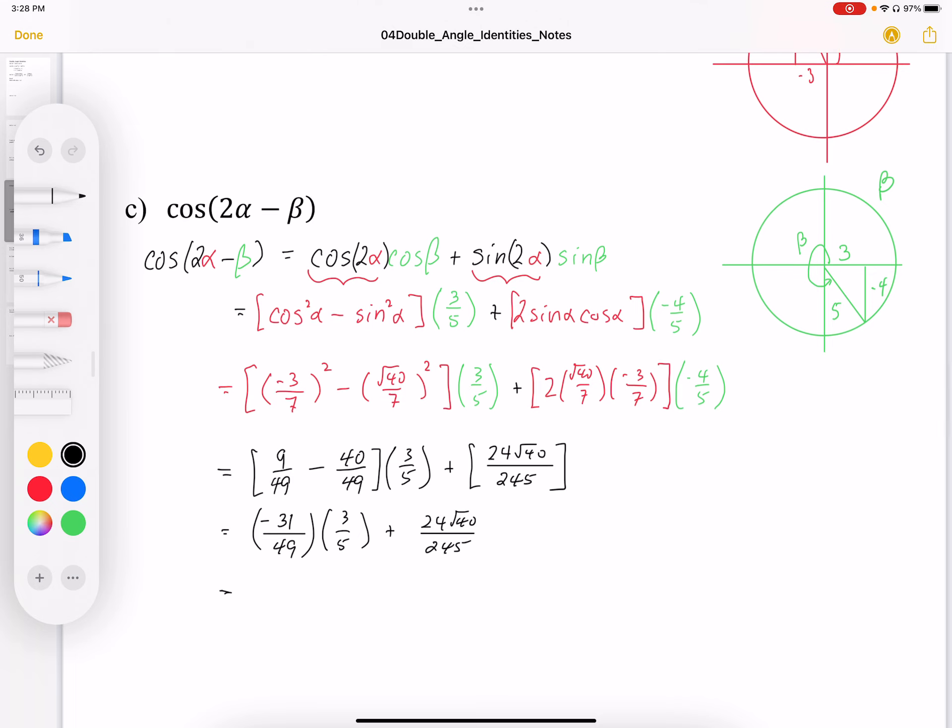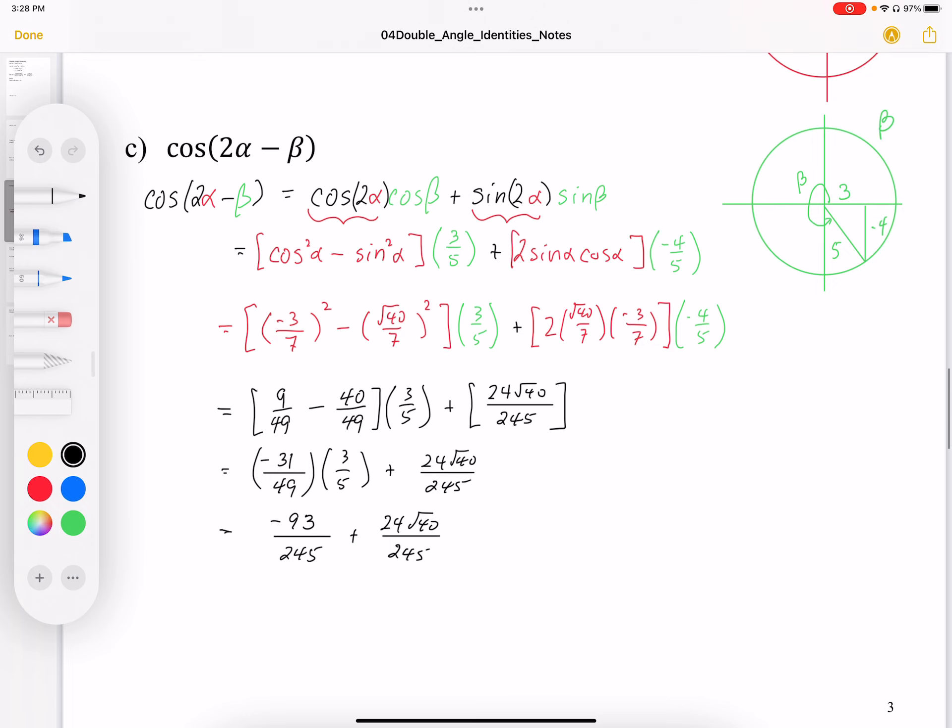So the final answer is going to be negative 93 plus 24 root 40 over 245. And if we want to, you can leave your answer like this.